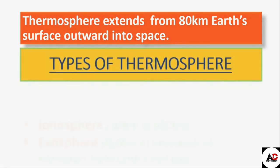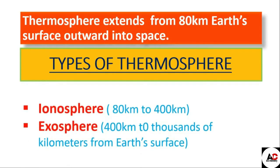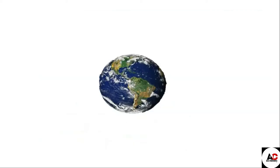There are two types of thermosphere: the ionosphere and the exosphere. The ionosphere extends from 80 km to 400 km from Earth's surface, while the exosphere extends from 400 km to thousands of kilometers from Earth's surface.